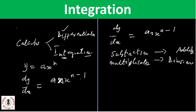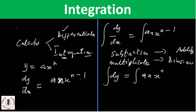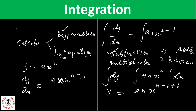To integrate dy/dx, I'll bring an integral sign — meaning I'm integrating. So integrating dy will be the same thing as integrating anx raised to power n minus one dx. Integrating dy obviously becomes y. Now for the exponent, n minus one becomes n minus one plus one, because where we had subtraction we'll have addition.